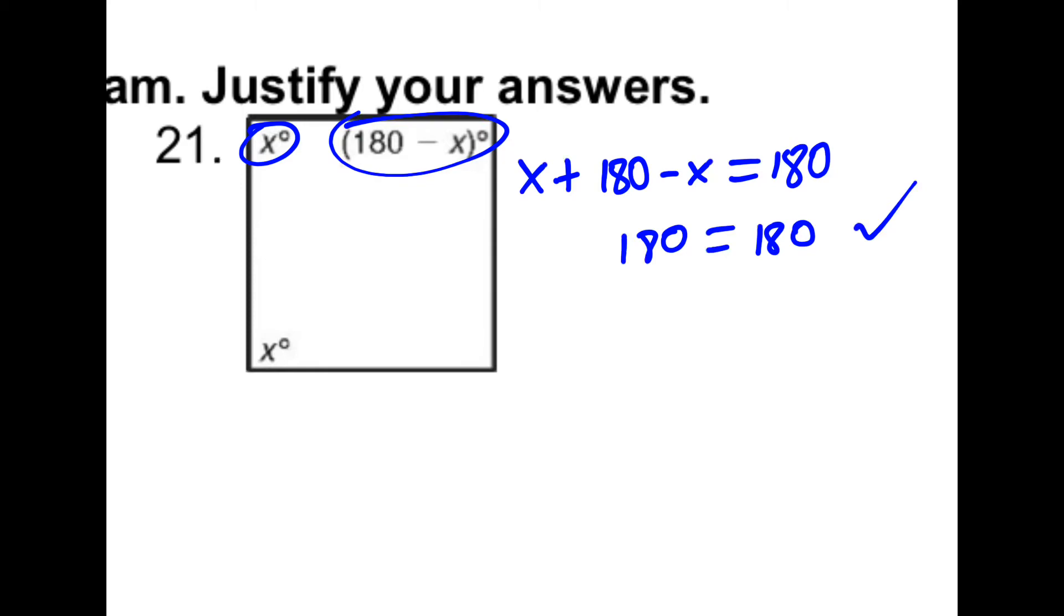The condition to prove that this is a parallelogram, though, is that one of the angles has to be supplementary with both adjacent angles. So if the x was over here, this would work. But since it's across the way and not adjacent, we can't conclude that this is a parallelogram. It could be, but we don't know for certain.